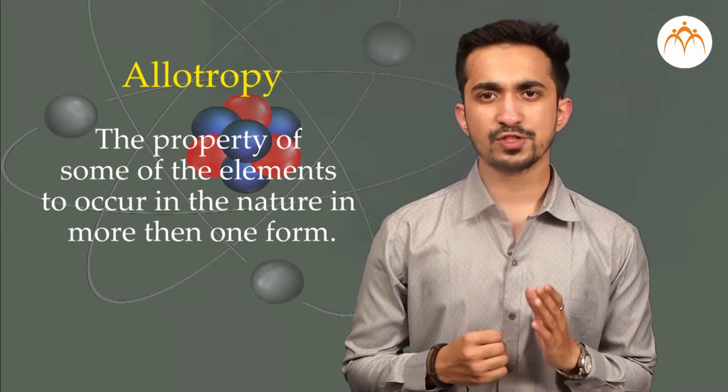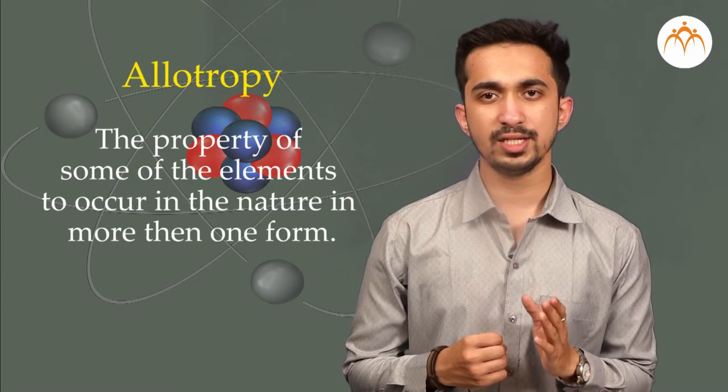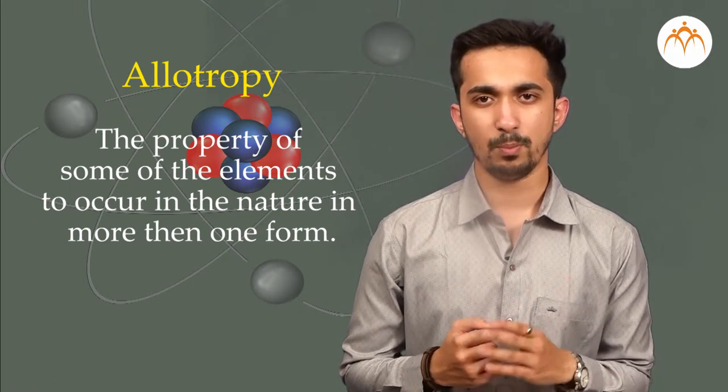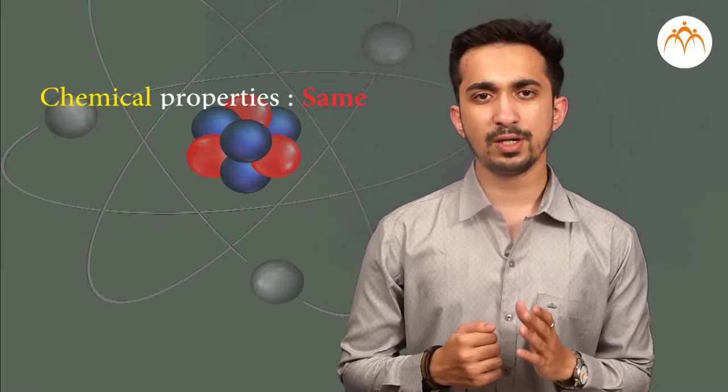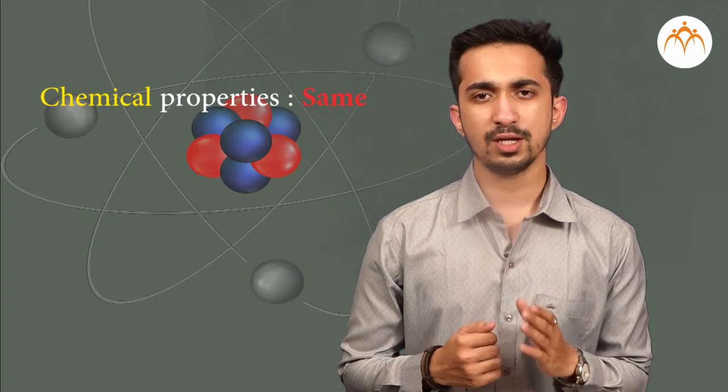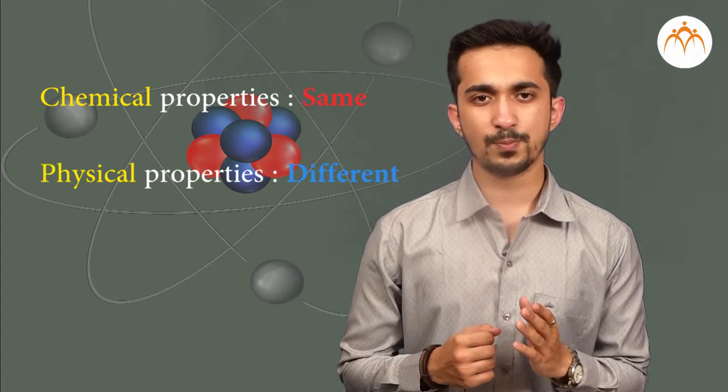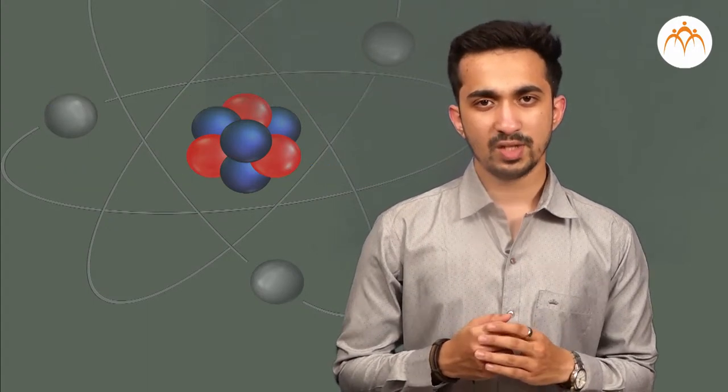Allotropy is the property of some of the elements that occur in nature in more than one form. The chemical properties of these different forms are the same, but their physical properties are different. And this ability to exhibit different forms is called as allotropy.